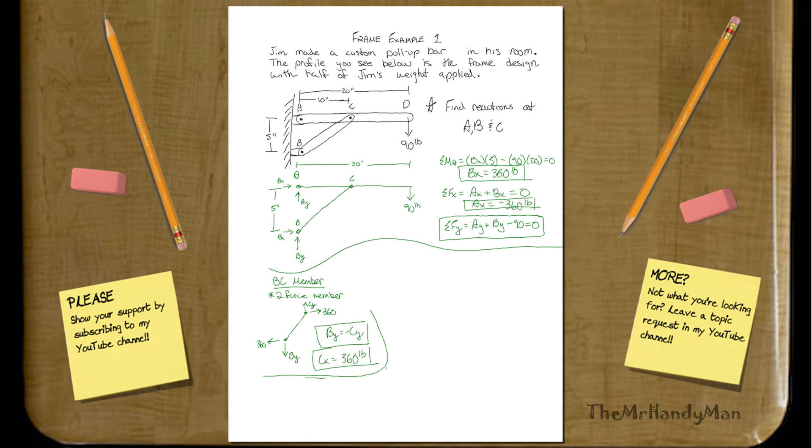We just kind of carry this along with us. A lot of people don't even consider the reactionary forces at B because we know that C is a two-force member. You can actually work things from there as well. But we did it that way. Yeah, let's continue on.